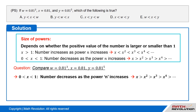We are dealing with the property: if 0 is less than X is less than 1, then the number decreases as the power n increases — X is greater than X squared, is greater than X cubed, is greater than X to the power of 4, and so on. So, since 0 is less than 0.81 is less than 1, we have that Y equals 0.81 to the power of 5, is less than W which equals 0.81 cubed, is less than X which equals 0.81. That is, Y is less than W is less than X.